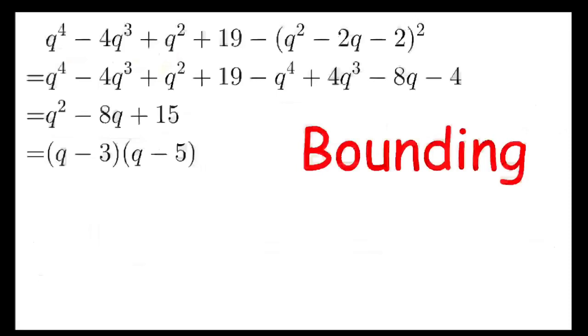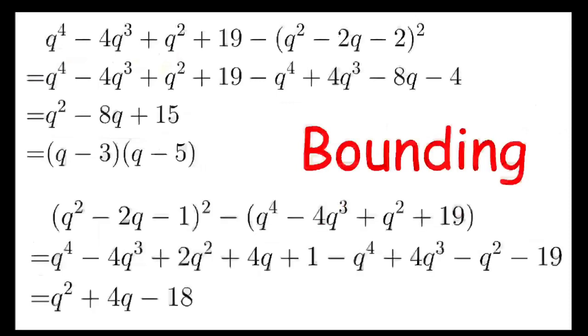My construction is to consider (q^2 - 2q - 2)^2, which is supposed to be the smaller perfect square, and the other polynomial is (q^2 - 2q - 1)^2, which is supposed to be the larger polynomial. After doing some algebra, we can tell that the difference is (q - 3)(q - 5) on one side, and on the other side is q^2 + 4q - 18.